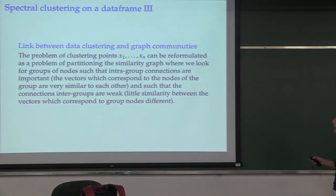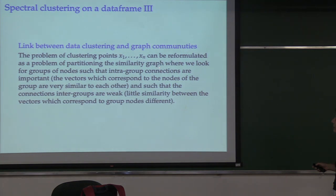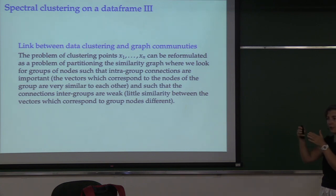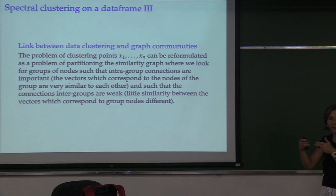The link between data clustering and graph communities: the problem of clustering points can be reformulated as a problem of partitioning the similarity graph, where we look for groups of nodes such that intra-group connections are large and between-group connections are weak. This reflects the idea that points in R^p which are close have a larger probability of being connected because their similarity is large.